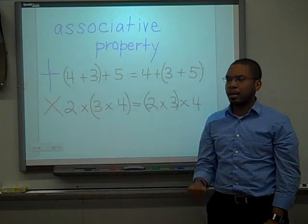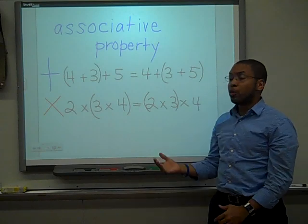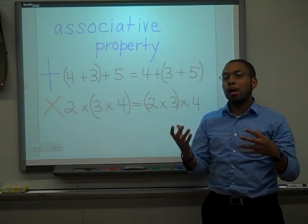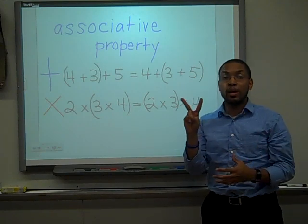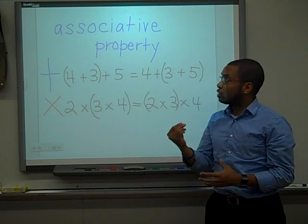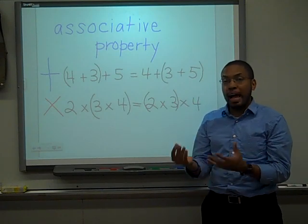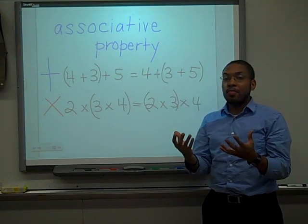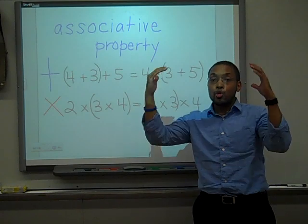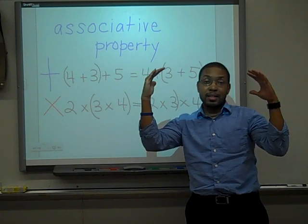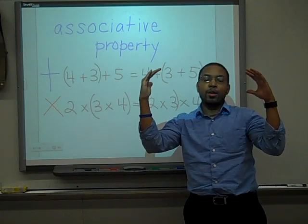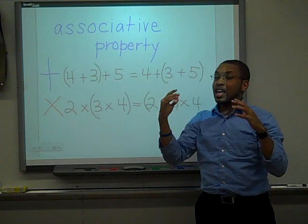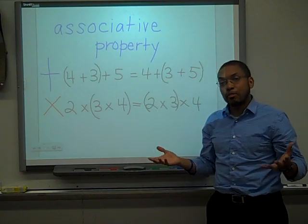The associative property. Now we know that you can only add or multiply two numbers at a time. The associative property says that it doesn't matter how you group — that means how you add or multiply two numbers at a time — it's not going to change the result.